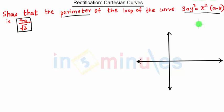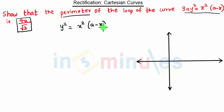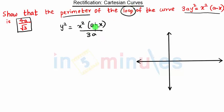We can write this curve as y² = x²(a − x) / 3a. If you don't know how to draw this curve, the hint is given in the question itself — the question mentions 'the perimeter of the loop', meaning this curve has a loop.